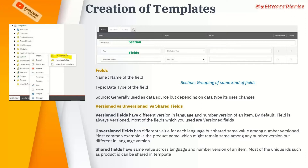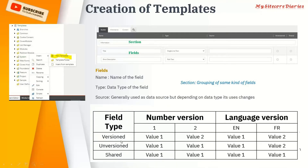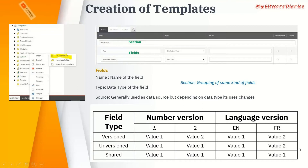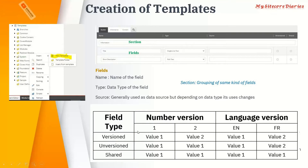Then you have a shared field, which is shared across both language versions and number versions. To give an example: for a version field, English version one might have 'value one' and version two might have 'value two'. For an unversion field, all number versions within English will have the same value, but it differs across languages. A shared field will have the same value everywhere.